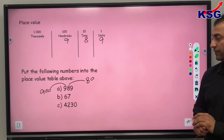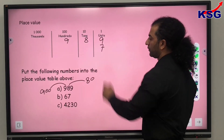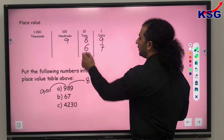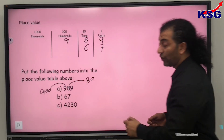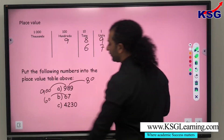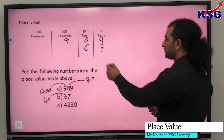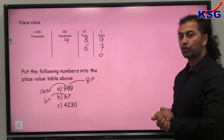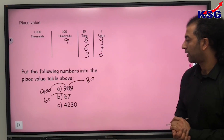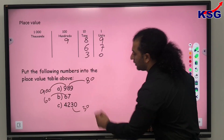In the next question, 7 represents unit value — this goes to the unit column. And 6 represents tens, so the value of 6 is 60. In our third question, 0 represents unit value. 3 represents tens value, so the value of 3 is 30.